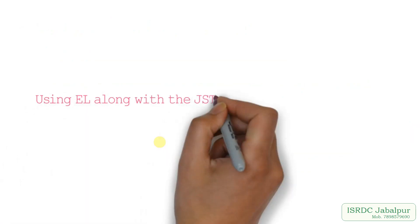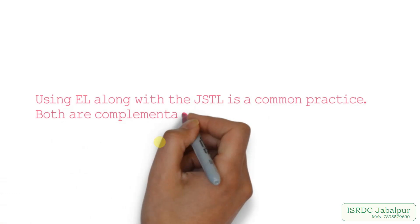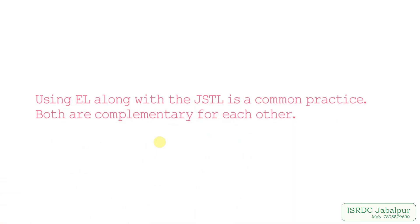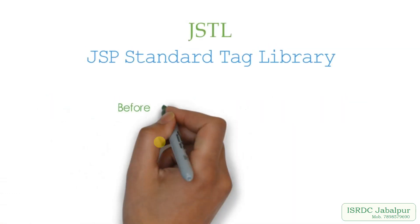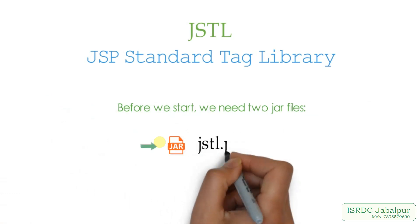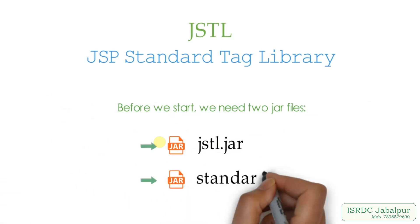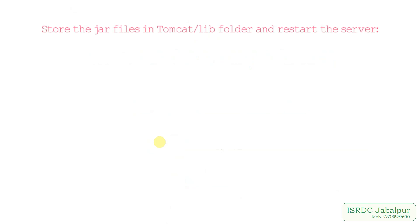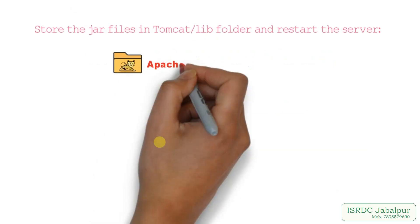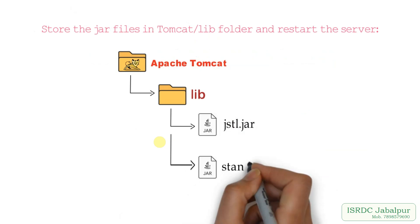JSTL has predefined libraries, and without any hassles we can program using EL along with JSTL — it's a common practice and both are complementary to each other. But before we start, we need to download two JAR files: the first is jstl.jar and the other is standard.jar. Once downloaded, keep them in the Tomcat lib directory and don't forget to restart the server.